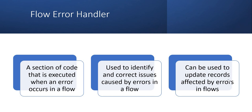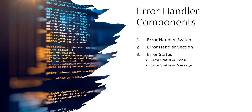They can also be used to update the records affected by errors in the flow. For example, if you are updating an incident or a change record and the flow errors out, you can revert those changes or update the work notes of that ticket saying there is an error in the flow, please contact your admin. That's the beauty of flow error handling. So let's quickly jump to ServiceNow and see all these components.